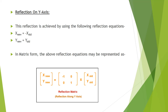Next, we calculate the reflection on the y-axis. For reflection on the y-axis, x-new equals minus x-old and y-new equals y-old. So only the x coordinate changes. The matrix representation for reflection on the y-axis is [[-1, 0], [0, -1]] multiplied by [x-old, y-old].